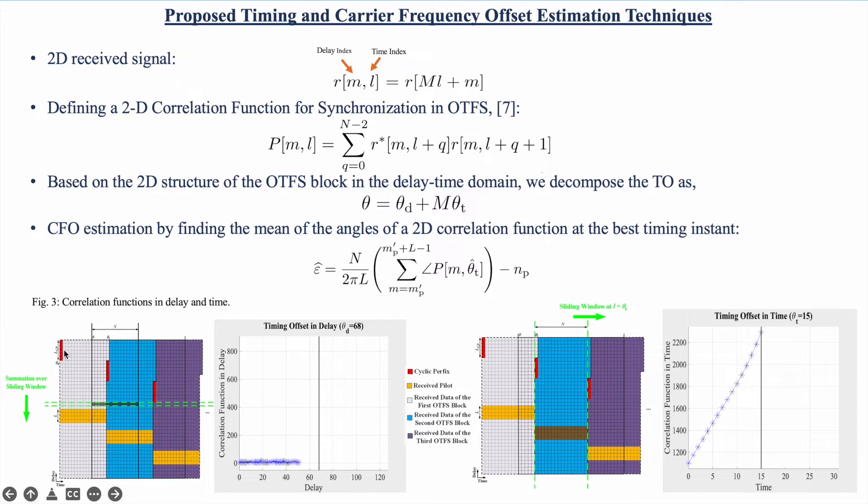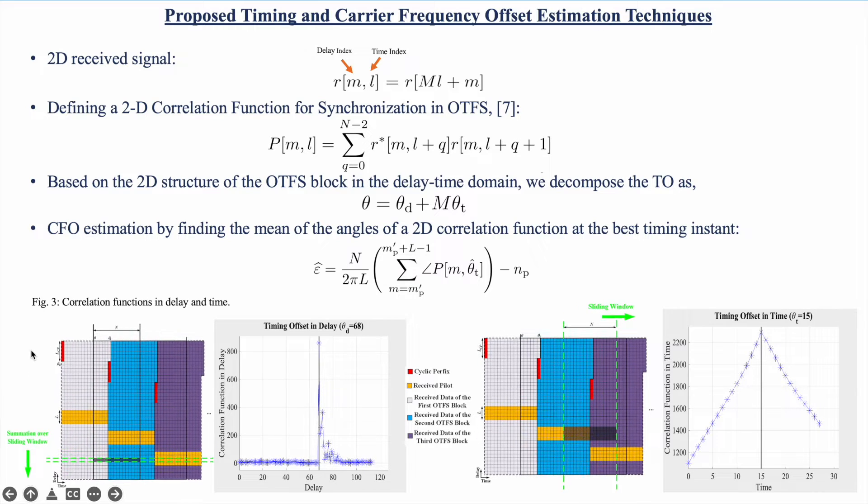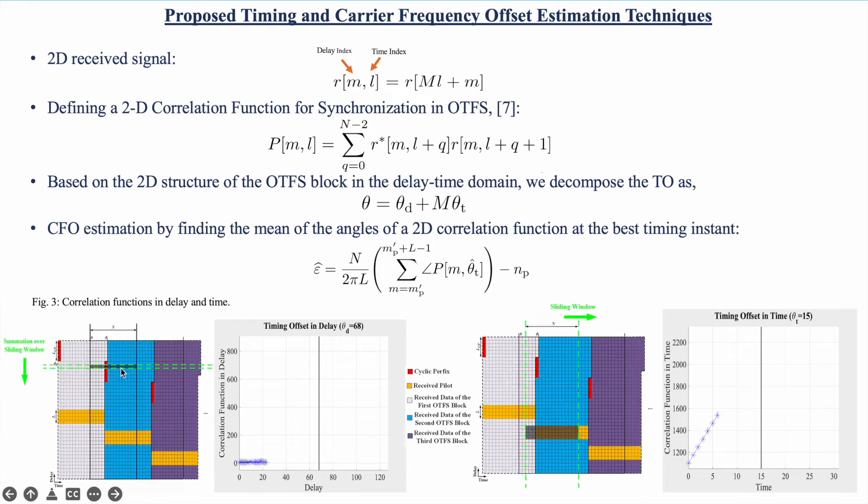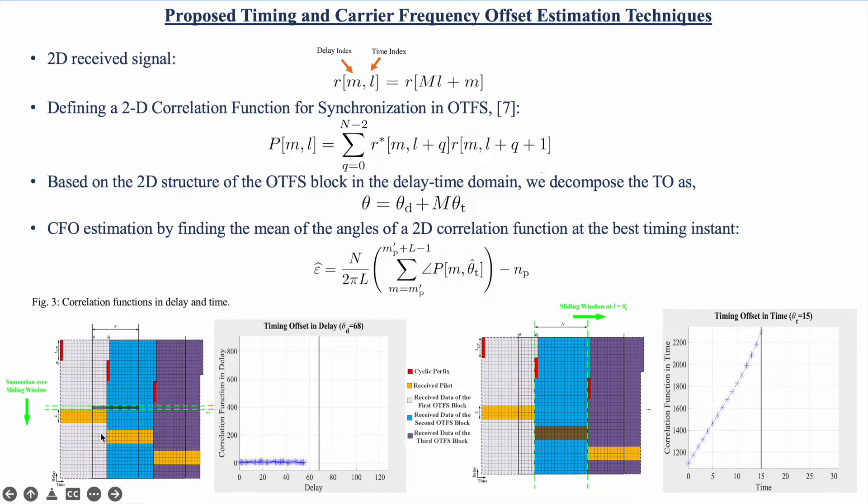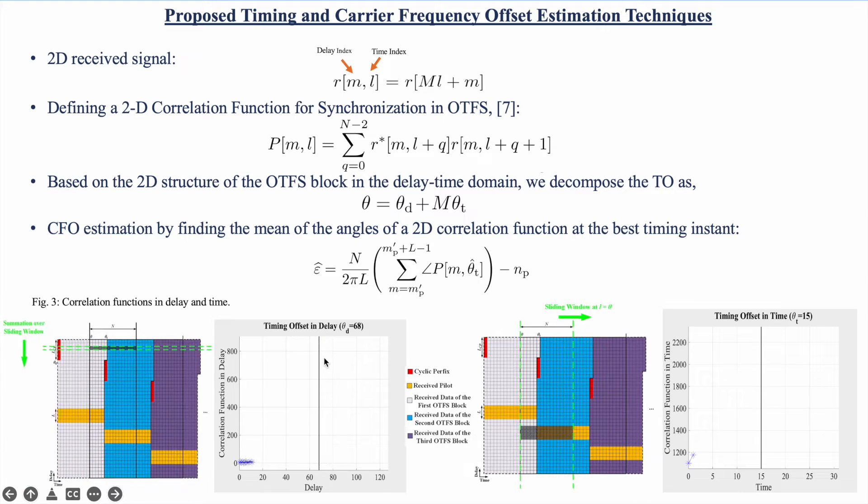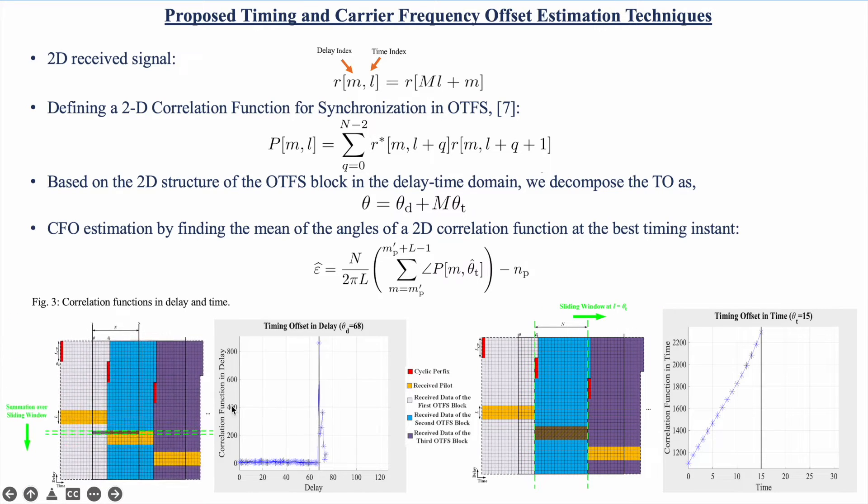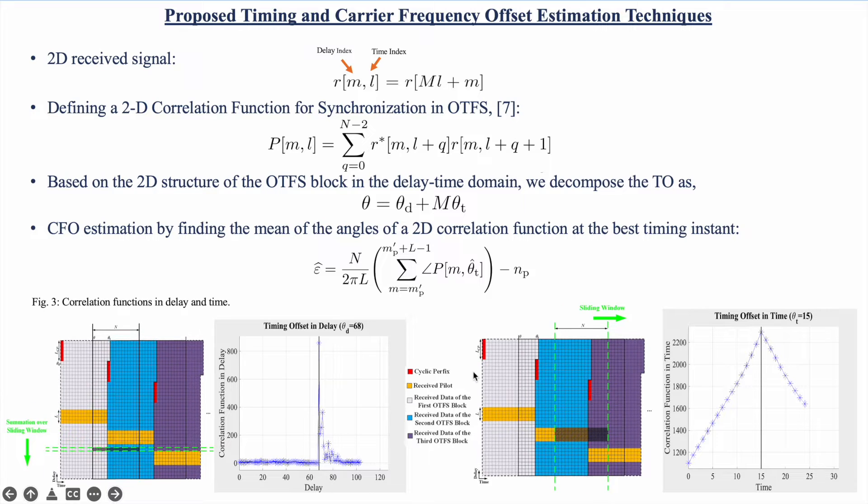To estimate this timing offset, as we can see in this figure, the correlation window is sliding over the different delays and takes a summation over time to find the position where the correlation window is fully aligned with the pilot. Here is the timing offset in delay.